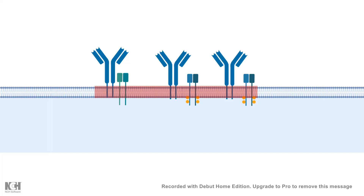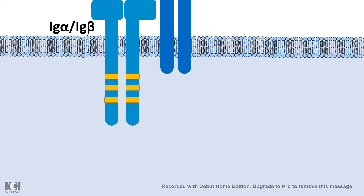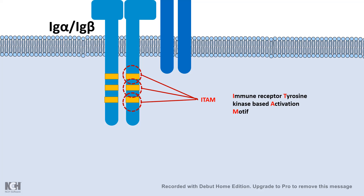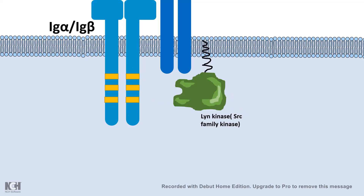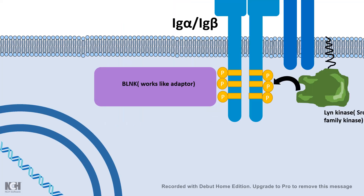One of the most important events is receptor clustering. Important kinases such as Lyn kinase can be part of these lipid rafts and can phosphorylate several components of the B cell receptor cluster. Igα and Igβ contain immunoreceptor tyrosine-based activation motifs, or ITAMs, which are sites for phosphorylation by Src family kinases like Lyn kinase. The phosphorylated ITAMs are docking sites for adapter molecules such as BLNK.